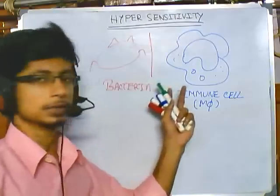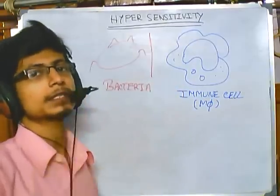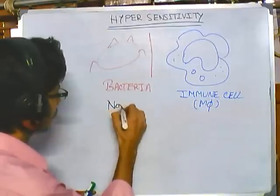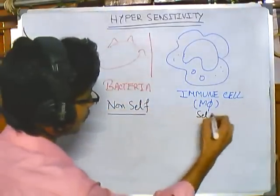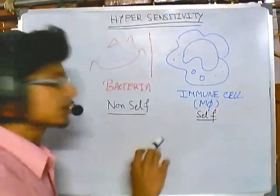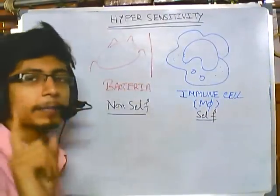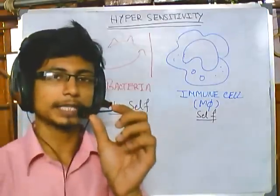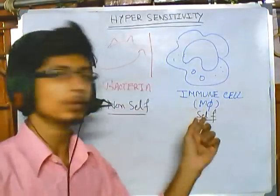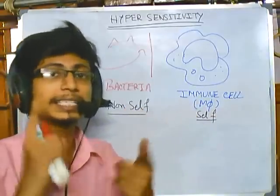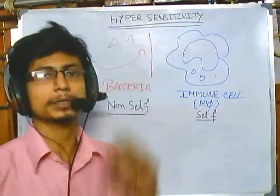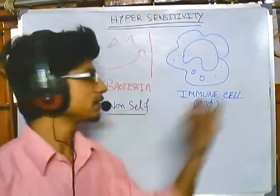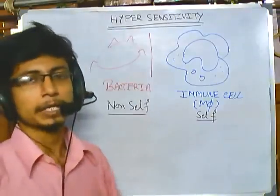Immune cells are configured in such a way that they can distinguish between two different types: foreign cells (non-self) and self cells. Each immune cell has the ability to recognize its own particles and also recognize other particles — whether a part of a cell, a peptide sequence, a protein, or a lipid. This ability gives them the unique character to find and kill pathogens. If they lose this character, it results in a loss of immune response inside the body.